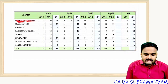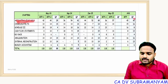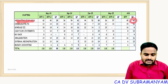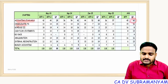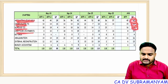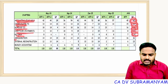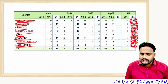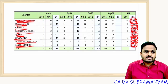From accounting standards, 43 marks are coming. Consolidated financial statements: 16 marks. Schedule 3: 8 marks. Cash flow statements: 13 marks. Buyback: 4 marks. Amalgamation: 16 marks. Internal reconstruction: 13 marks. Branch accounting: 6 marks.